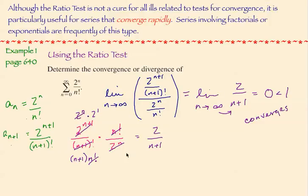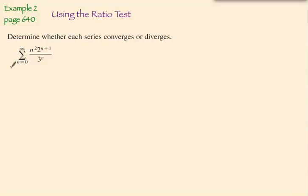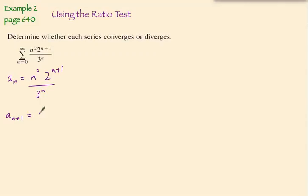Let's look at another example. I'm going to identify the a sub n term as n squared times 2 to the n plus 1 over 3 to the n, and then the a sub n plus 1 term as n plus 1 quantity squared times 2 to the n plus 2 over 3 to the n plus 1. Let's set up our limit.